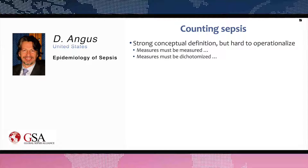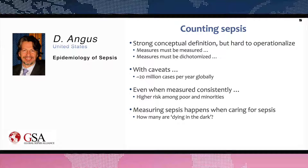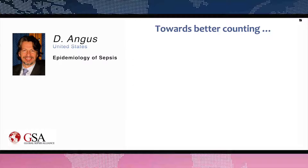In conclusion, when we think about counting sepsis, we start with a pretty strong conceptual definition, but it's hard to operationalize — the measures must be measured and we feel we must dichotomize them. Nonetheless, applying those measures with the caveats described, we end up thinking there are about 20 million cases per year globally. Even within the United States, we see higher risk among the poor and minorities, which means that in places where we're not caring for sepsis — where there's more poverty and more minorities — there may be even higher rates, making us increasingly worried about those dying in the dark.